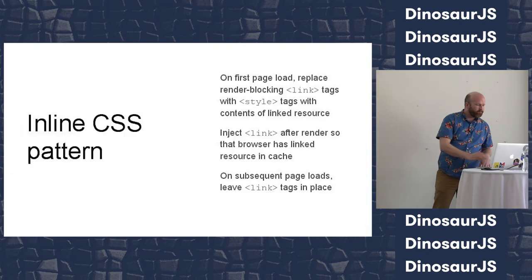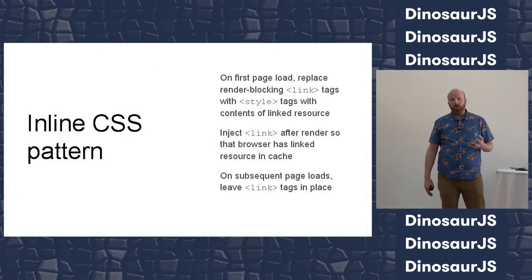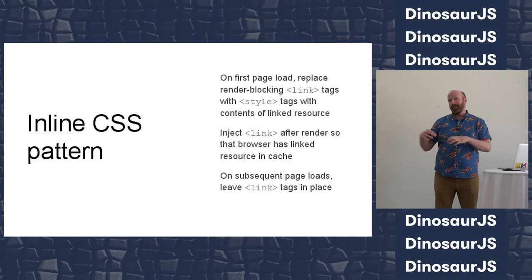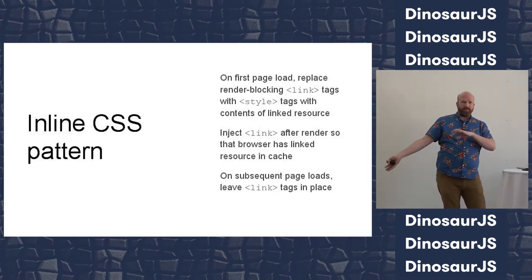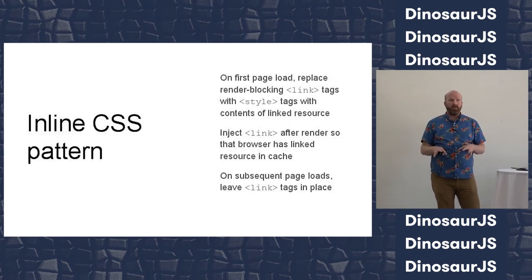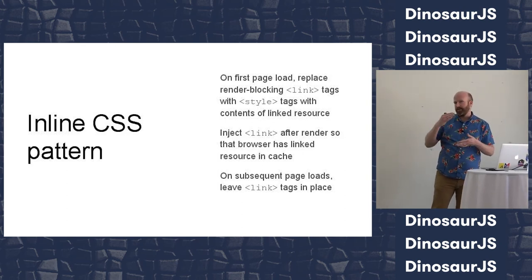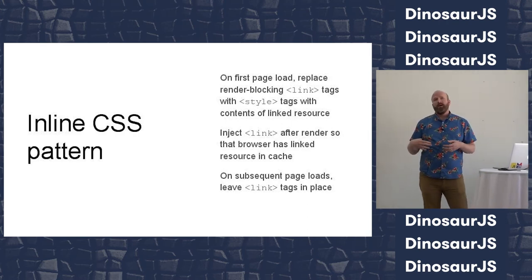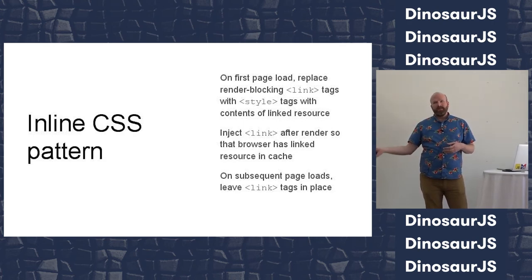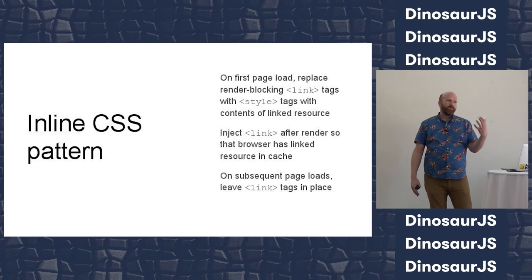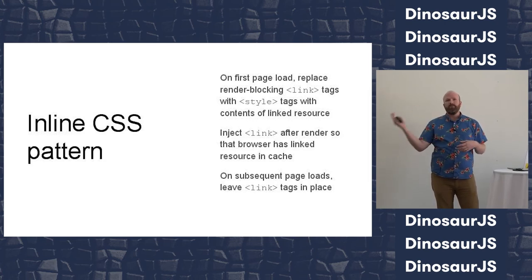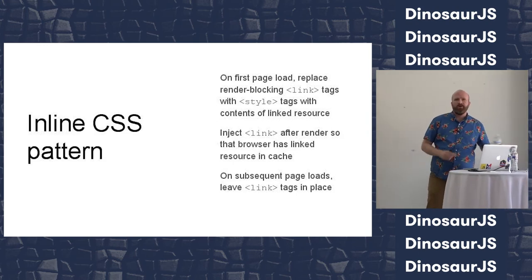The inline CSS pattern goes like this: for users with a cold cache, the first time they come to your site, instead of a link tag you replace it with a style tag containing the contents of the file inline right into your HTML payload. This will make the HTML payload bigger, but because latency dominates and the browser doesn't have to make an extra request, you're actually likely to render much faster. If you're getting really fancy, you can use JavaScript to asynchronously add the link tag after you've rendered so it gets cached, then set a cookie so your server knows not to inline it on the next request.